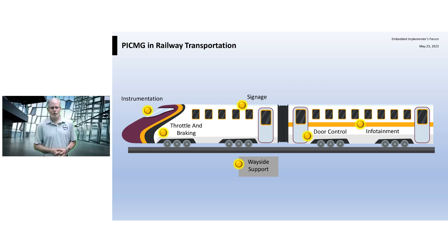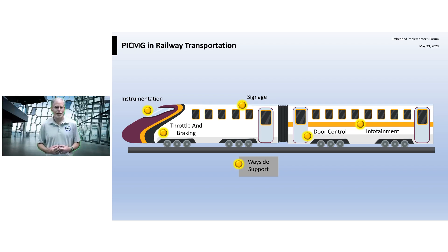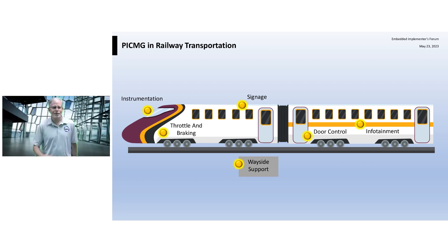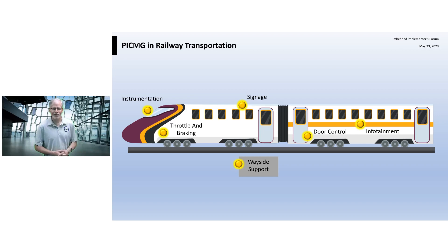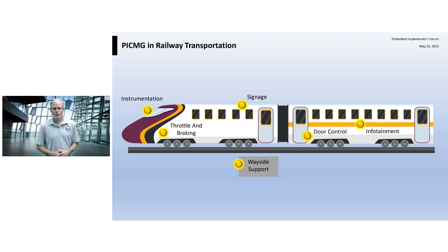We've got the instrumentation cluster within the cab of the train. We've got throttle and braking control — there are actually governmental requirements for throttle and braking control, because if the train doesn't brake properly, there are safety concerns. Signage inside the train — if you've ever looked up and seen 'next station' or 'next stop' — all has some sort of automation and compute control. Door control, making sure the doors open when they should and don't open when they shouldn't. There's also infotainment, which might use special graphics processors to display things in a very power-efficient way, with constraints on power and size.